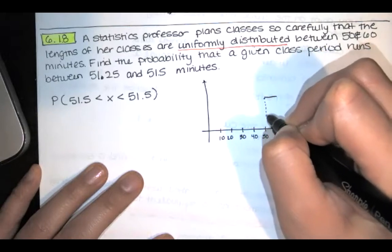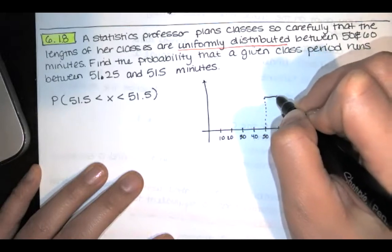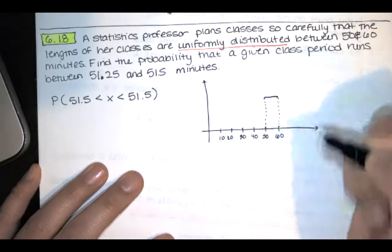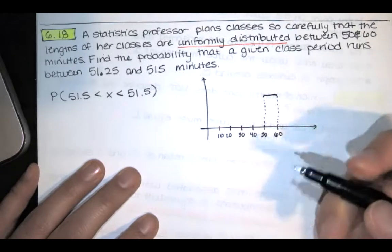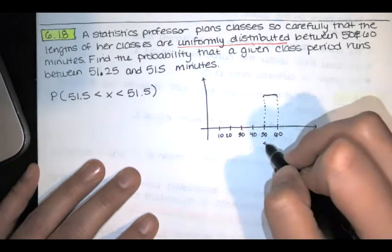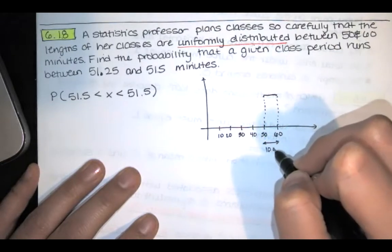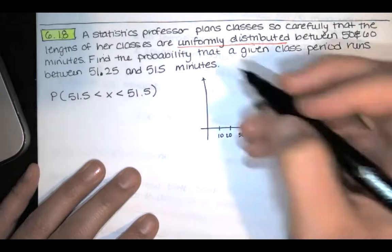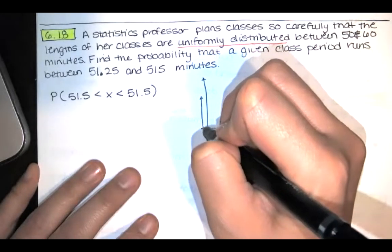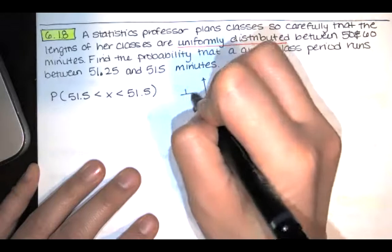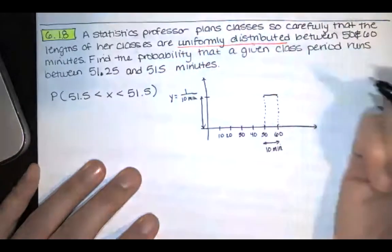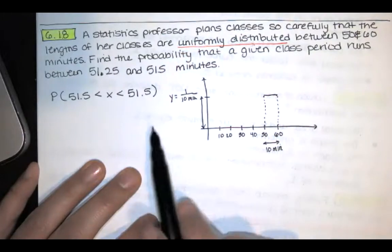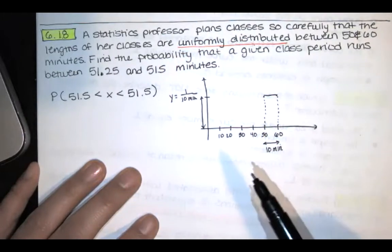Now this is not to scale. But remember, whenever you're talking about a probability distribution, the area under the curve needs to be equal to one. So if this interval is 10 minutes, well then this height needs to be one over 10 minutes. So that's our y value there. Okay, so now we've got our uniform distribution.